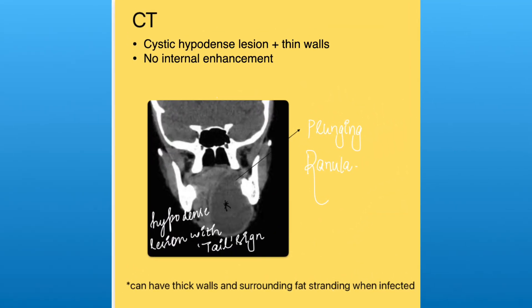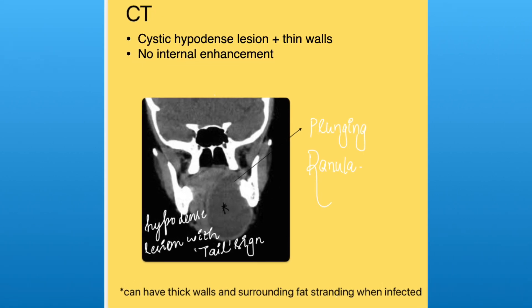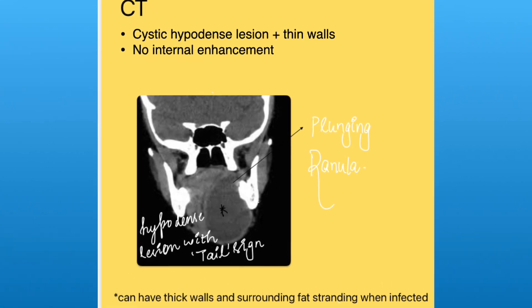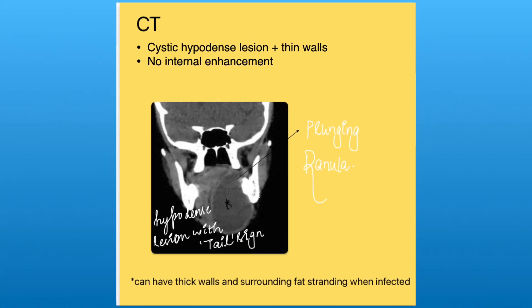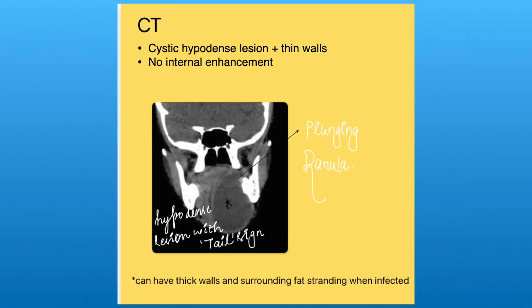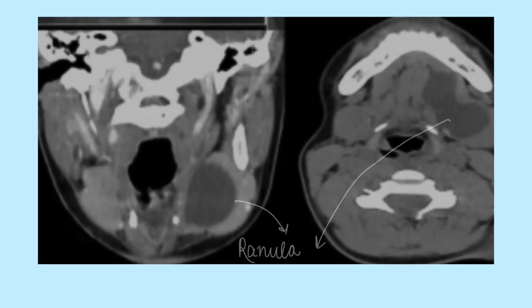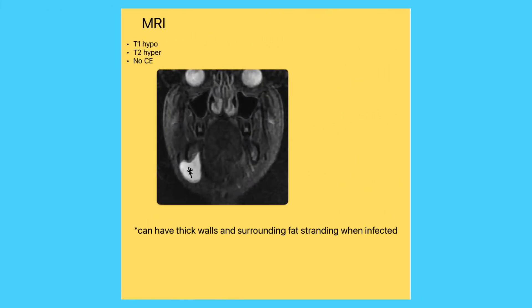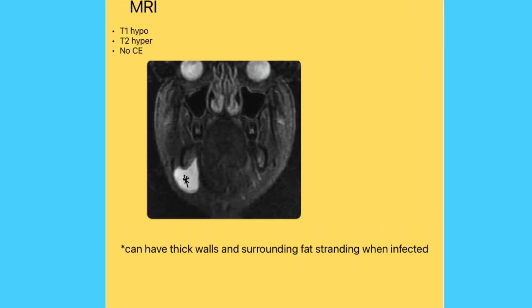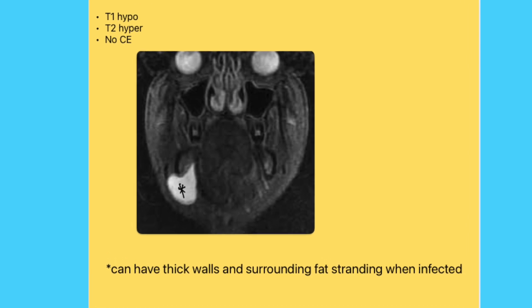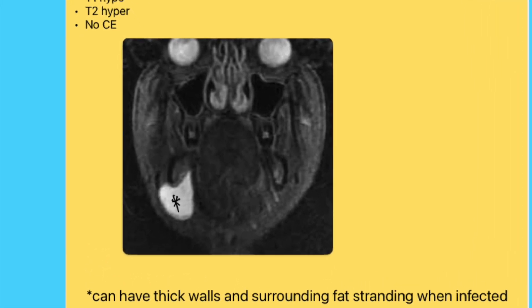On CT scan, ranulas are typically located in the sublingual space and can be seen extending into the submandibular space. On MRI, they are typically T1 hypointense and T2 hyperintense lesions seen in the sublingual space, which may or may not extend into the submandibular space. They can be thick-walled when infected.